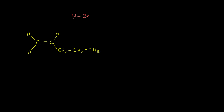Let's think about how hydrogen bromide might react with this molecule. We have one, two, three, four, five carbons. It has a double bond right here. If we start numbering at this end, because that's where the double bond is, then this would be pent. The double bond starts at the number one carbon, pent-1. And it's obviously an alkene — it has a double bond. So it's pent-1-ene. Sometimes this is called 1-pentene.